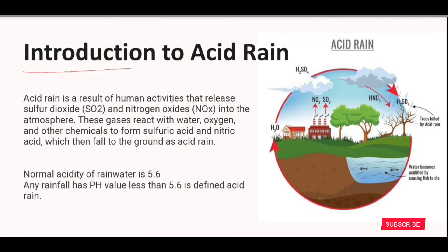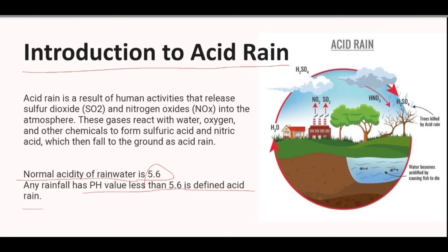Let's start with the basic introduction of acid rain. Acid rain is any kind of precipitation that has an acidic nature and a pH value less than 5.6. Remember, 5.6 is the acidity of normal rain water, so any precipitation with a pH value less than 5.6 is defined as acid rain.